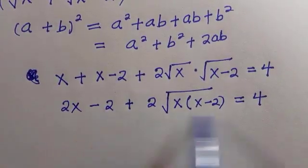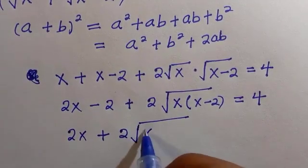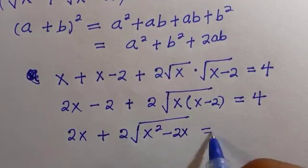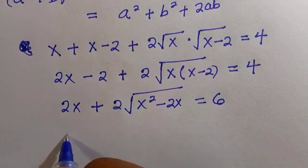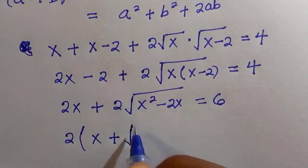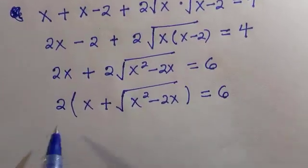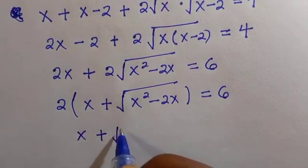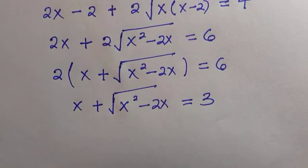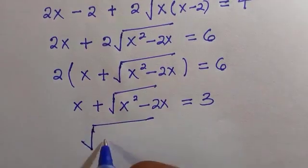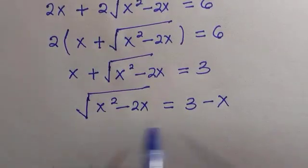We transfer negative 2 to the other side, giving us 2x plus 2 root of x(x-2) equals 6. Factoring out 2, we get x plus root of x squared minus 2x equals 3. Dividing both sides by 2 and transferring x to the other side gives us root of x squared minus 2x equals 3 minus x.